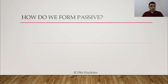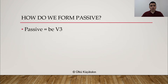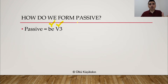Welcome back everyone! Now we will talk about how we form the passive voice, how we make sentences in passive. So when we say passive, we are talking about BE and verb 3. BE and verb 3. Without BE you will never have a passive, and without verb 3, you cannot have passive. So when we say passive, we are talking about BE plus verb 3. That's it. This is the most important part.